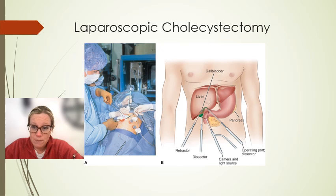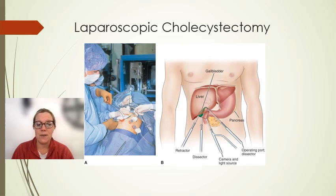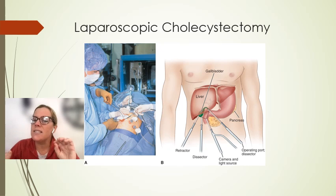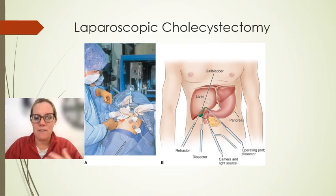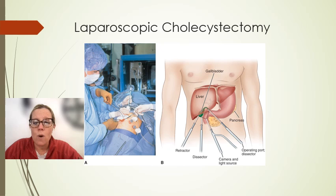Surgical intervention for biliary disease is the most common operative procedure in the older adult. The concern for this population is septic shock, accompanied by signs and symptoms including oliguria — small amounts of urine output — hypotension, mental status changes, tachycardia, and tachypnea.